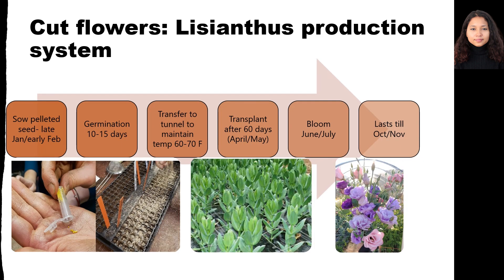Before I go to the budget of Lysianthus, I would like to talk about the production system we have outlined for this budget. In this budget, we have considered seeds as the source of production. Seeds or plugs can be used for the production of Lysianthus. If seeds are used, pelleted ones are recommended. Sowing of pelleted seeds is done in late January or early February. Germination occurs within 10-15 days of sowing.